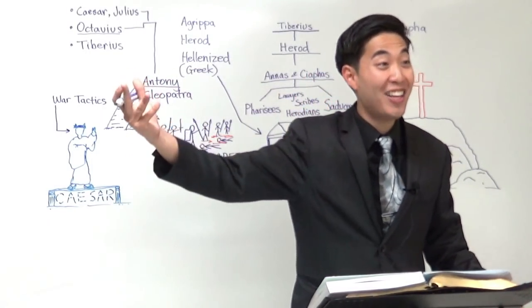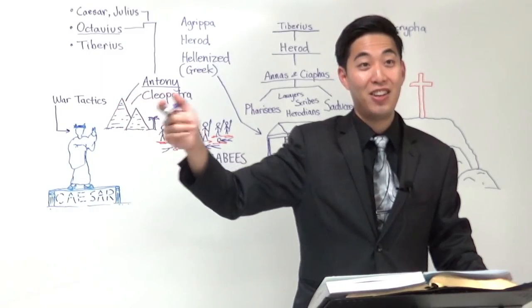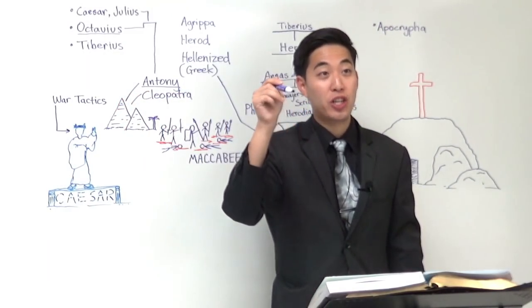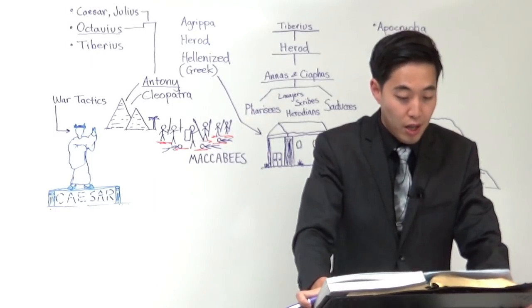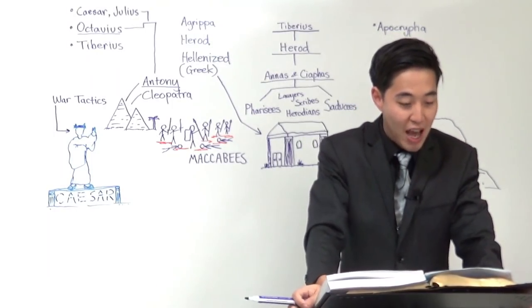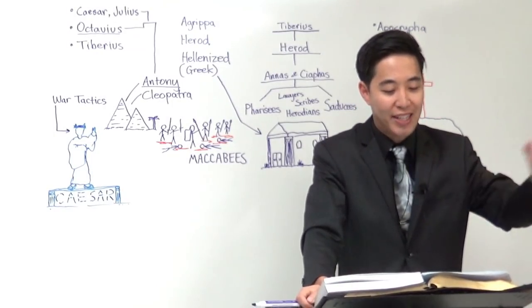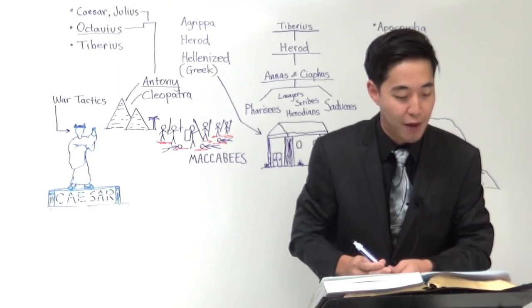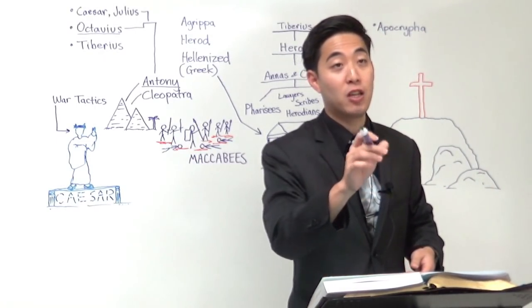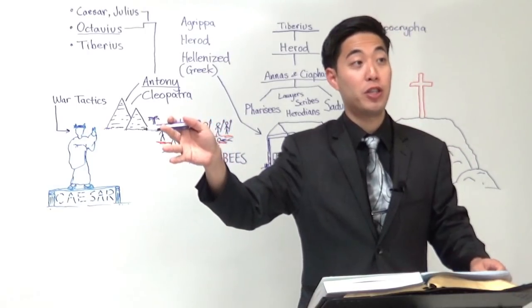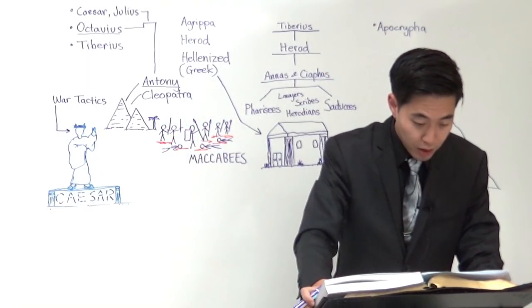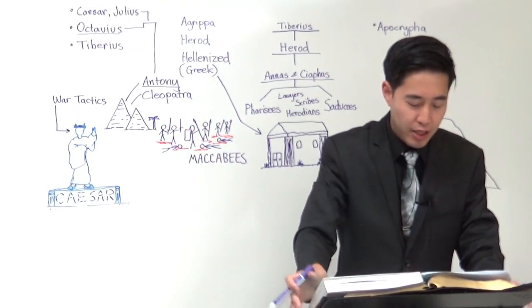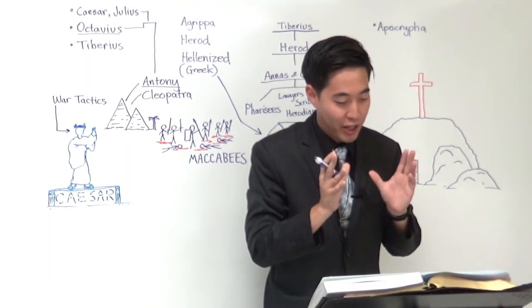But let's keep reading here this is evidence Tobit chapter 12 verse 9 alms cleanses all your sins wait that's Babylonian catholicism is it not look at that this is infesting Jewish sects this time for alms delivereth from death and the same is that which purgeth away sins and maketh to find mercy and life everlasting no the Bible says that the blood purges away our sins now this here are some hilarious passages.